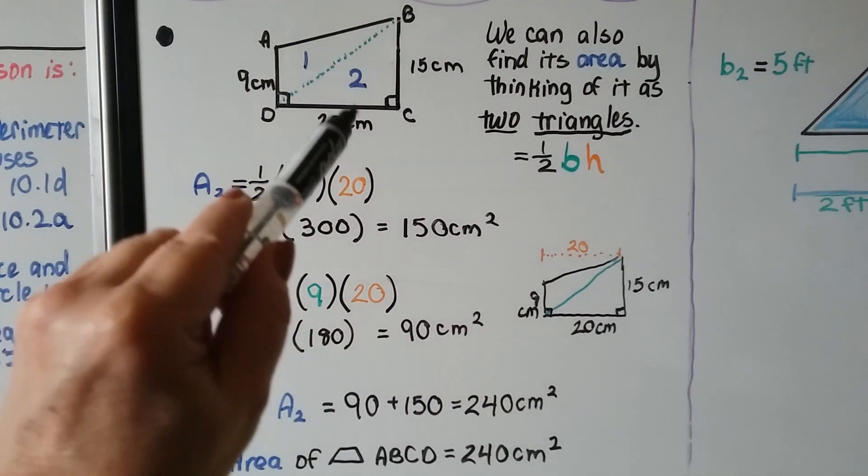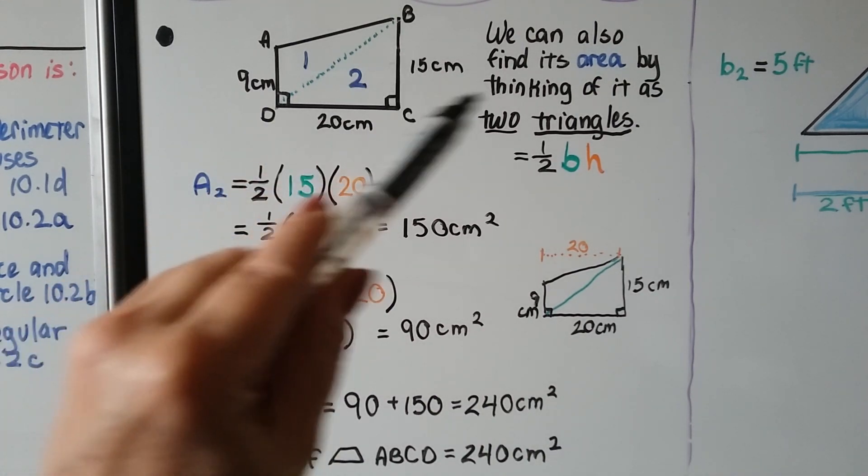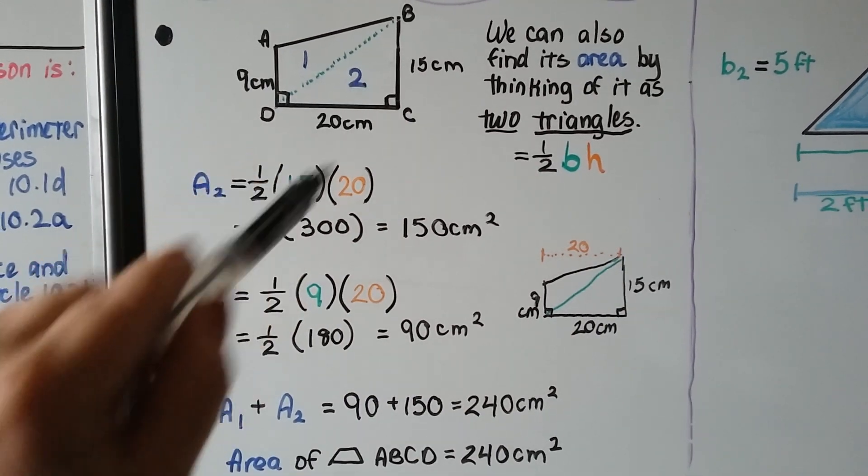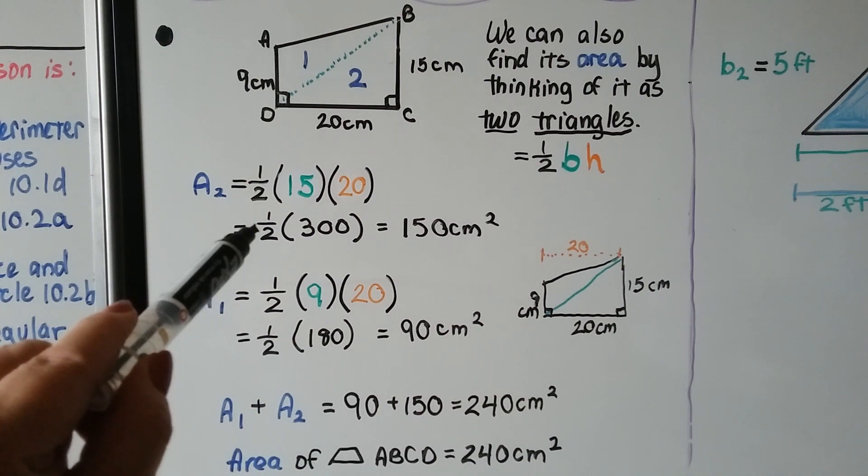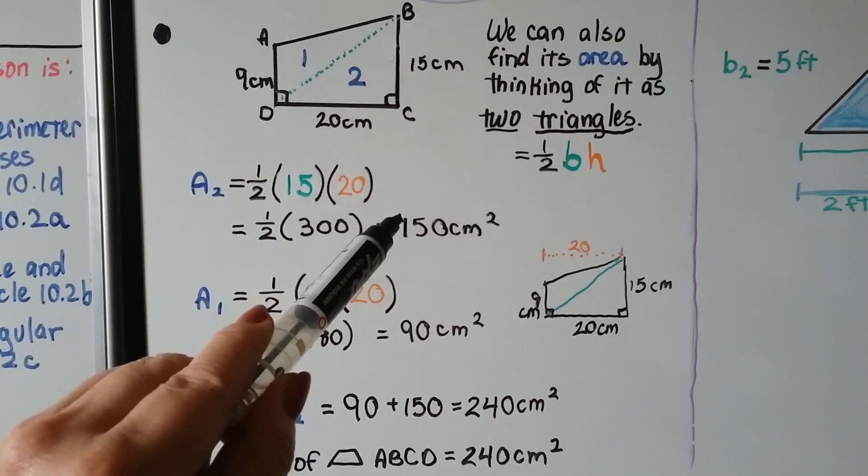We can see that this is a 90 degree angle right here. It's a right angle. So we could just do 15 times 20 for triangle 2, and then multiply it by a half, and we get 150 centimeters squared.